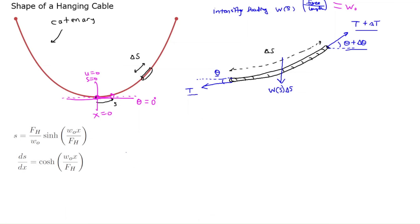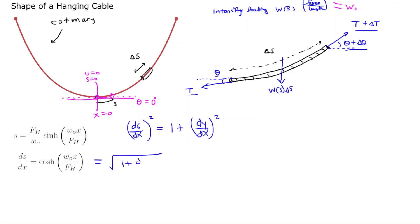We now have S = (F_h/W₀)·sinh(W₀·x/F_h). Taking the derivative with respect to x, dS/dx = cosh(W₀·x/F_h). We're interested in this because we can recall the Pythagorean relationship between dS/dx, dx, and dy/dx, and use it to solve for dy/dx, giving us an equation purely in terms of y and x — almost at the catenary shape.